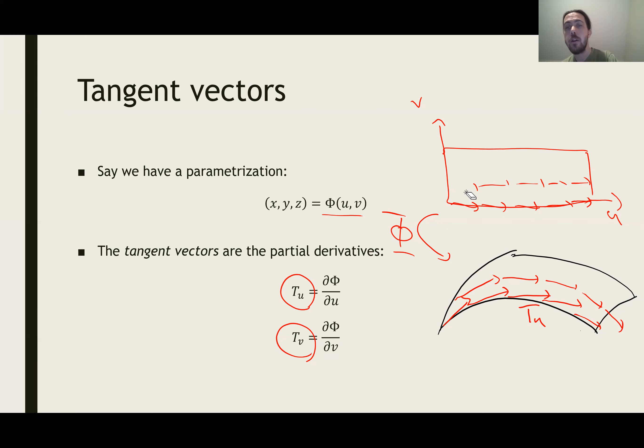If you like, if I instead draw a little coordinate grid on my u and v coordinates, and I look at what kind of grid I get on the surface inside 3D, the vectors tu and tv point parallel to those two directions.